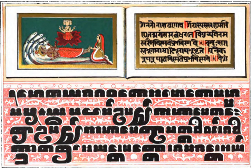Pali, or Magadhan, is a Middle Indo-Aryan language native to the Indian subcontinent. It is widely studied because it is the language of the Pali Canon or Tipitaka, and is the sacred language of some religious texts of Hinduism and all texts of Theravada Buddhism. The earliest archaeological evidence of the existence of canonical Pali comes from Pyu city-states inscriptions found in Burma, dated to the mid-5th to mid-6th century CE.